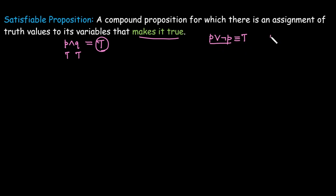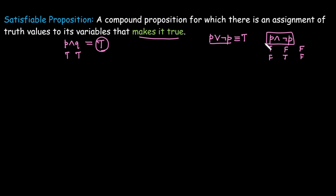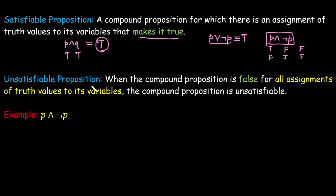But if we take 'P AND negation P': when P is true, negation P is false, so the result is false; when P is false, negation P is true, so the result is still false. This statement is never true in any case, meaning we are not satisfied. Such propositions are called unsatisfiable — when the compound proposition is false for all assignments of truth values to its variables.